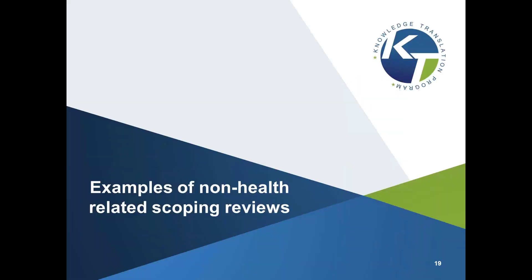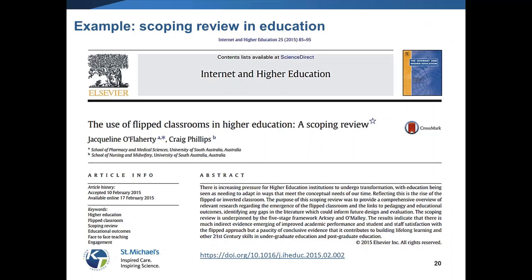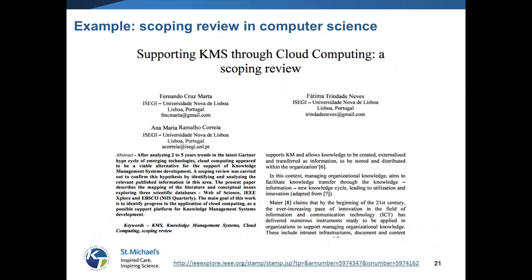Just to nail this concept home, I wanted to give a couple more examples of scoping reviews with a non-health flavor, since we are here with Gessie today. An example in education is looking at the use of flipped classrooms in higher education — again, trying to chart the literature and see what's been done before. In computer science, we're looking at KMS through cloud computing — a scoping review looking at what has ever been done in this area.